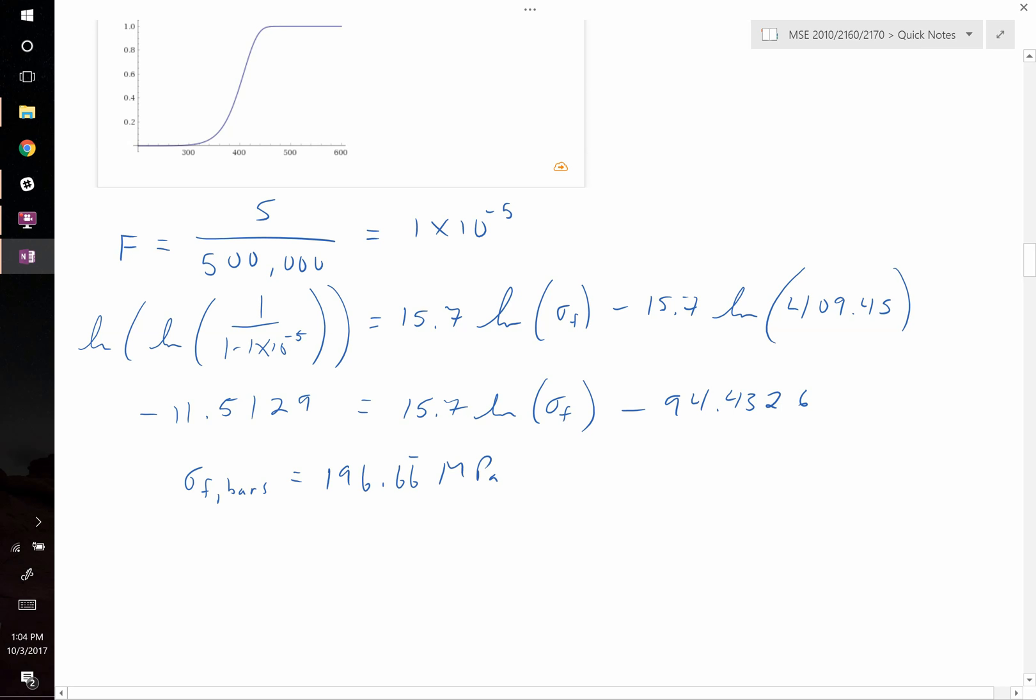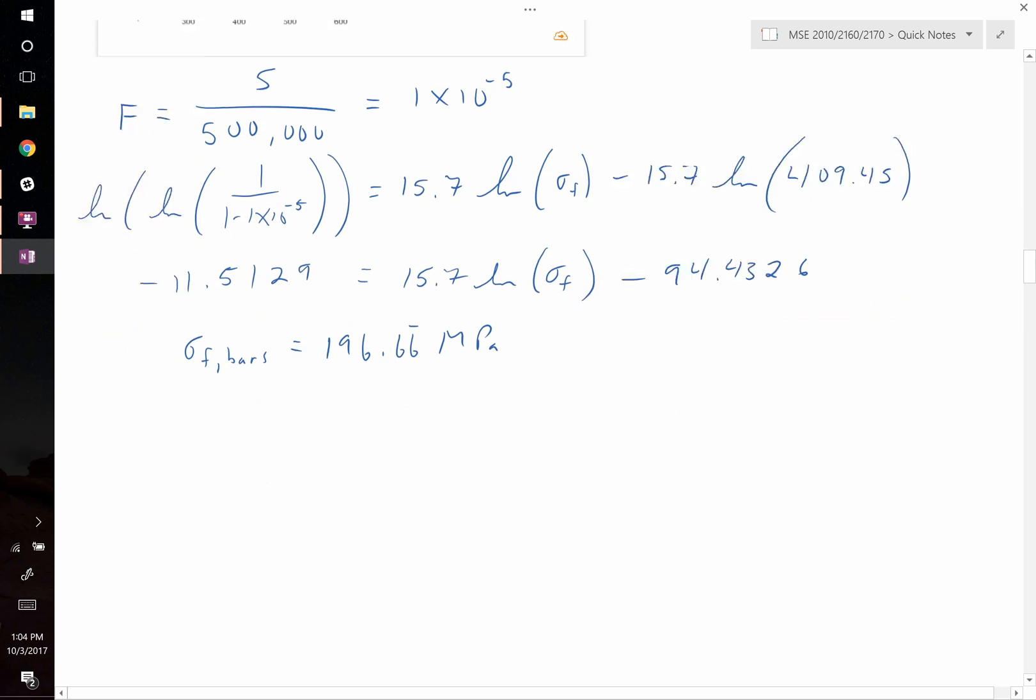However, the question doesn't ask for what would be the strength at which you would have 99.999% survival of the bars. It wants that survival rate in your components. So we need to scale from our bars to our components, but they don't have the same effective area that's under a load. In fact, we know that the area effective for a bar is equal to 1/20th of the effective area for a component.